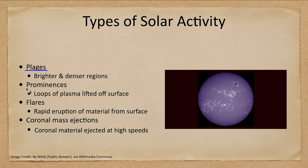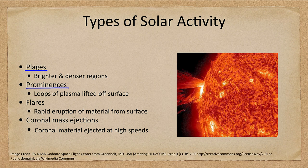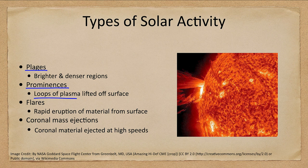We also have prominences, which are visible around the edge of the Sun as loops of plasma that are lifted off the surface. We see one here to the left-hand side where material has been lifted off by the solar magnetic field. As the magnetic field pops through the surface it lifts up ionized material — a plasma — which will then rain back down on the surface.